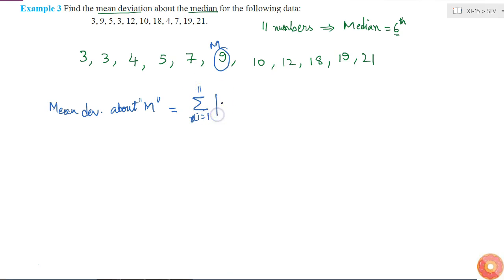This is equal to 1 by 11 times |3 minus 9|, which is 6, plus 6, plus 5, plus 4, plus 2, plus 0, plus 1, plus 3, plus 9, plus